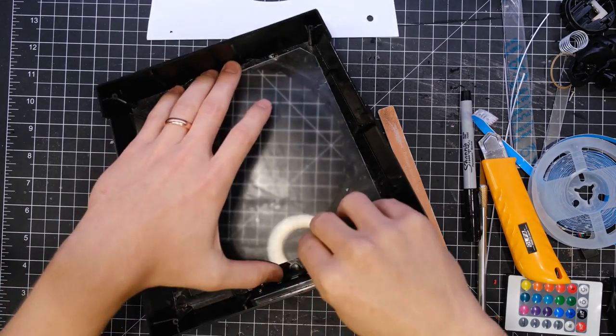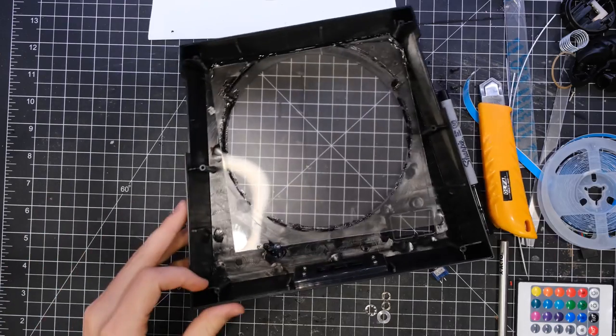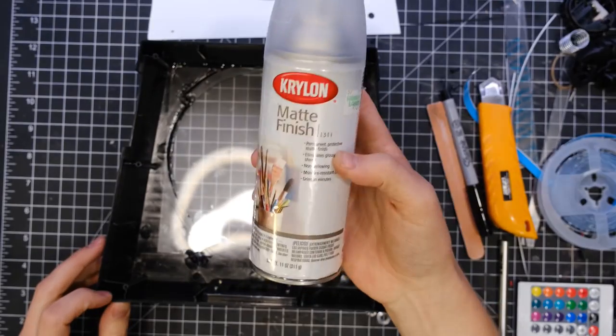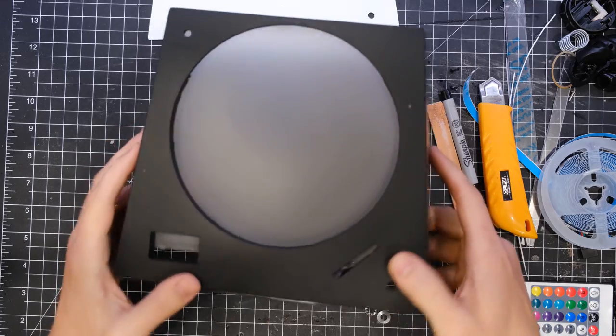I glued down the acrylic sheet and it was a little too clear, so I took it outside with some matte varnish and gave it a few coats. When that was all done, it was nice and frosty.